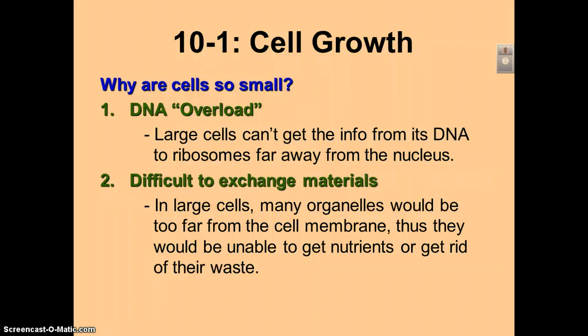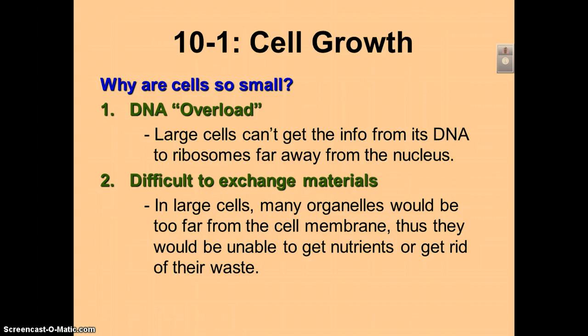The second reason is related to the first: difficulty to exchange materials. Materials are going to be able to diffuse in and out of a cell. If a cell is really, really big, the stuff in the interior of the cell is not going to be able to get nutrients diffused in, and certainly not going to be able to diffuse out waste. A big cell is going to have a hard time maintaining homeostasis because it can't move things in, through, and out of the cytoplasm very efficiently.